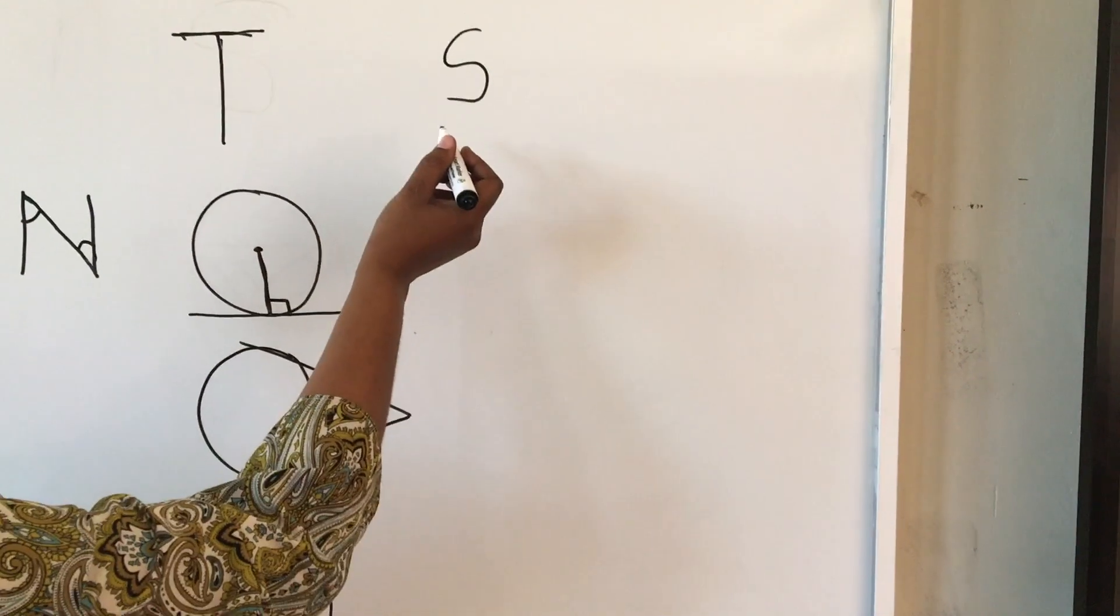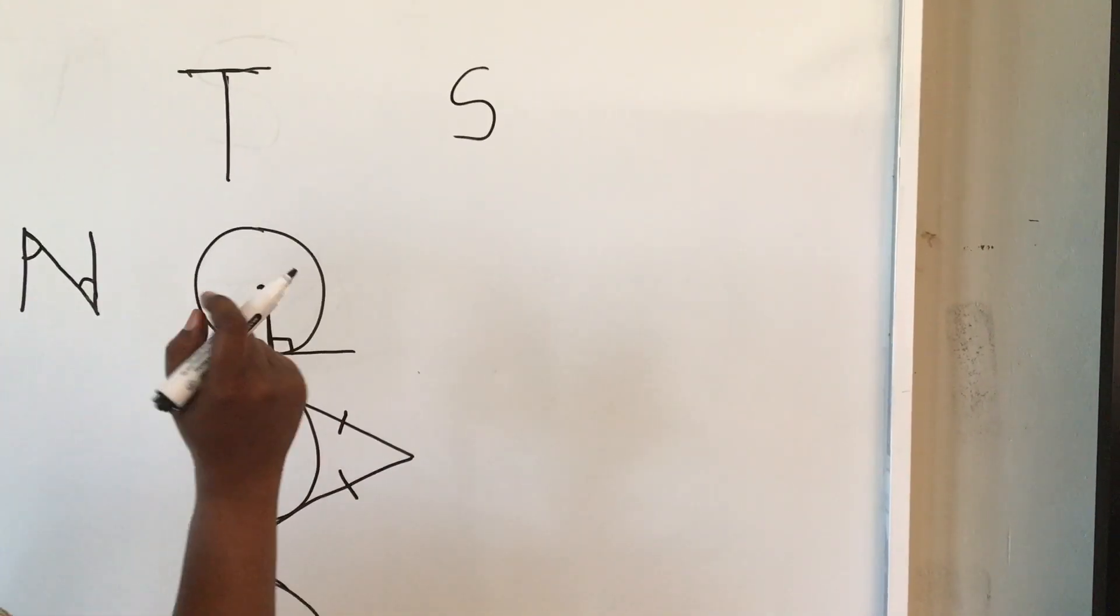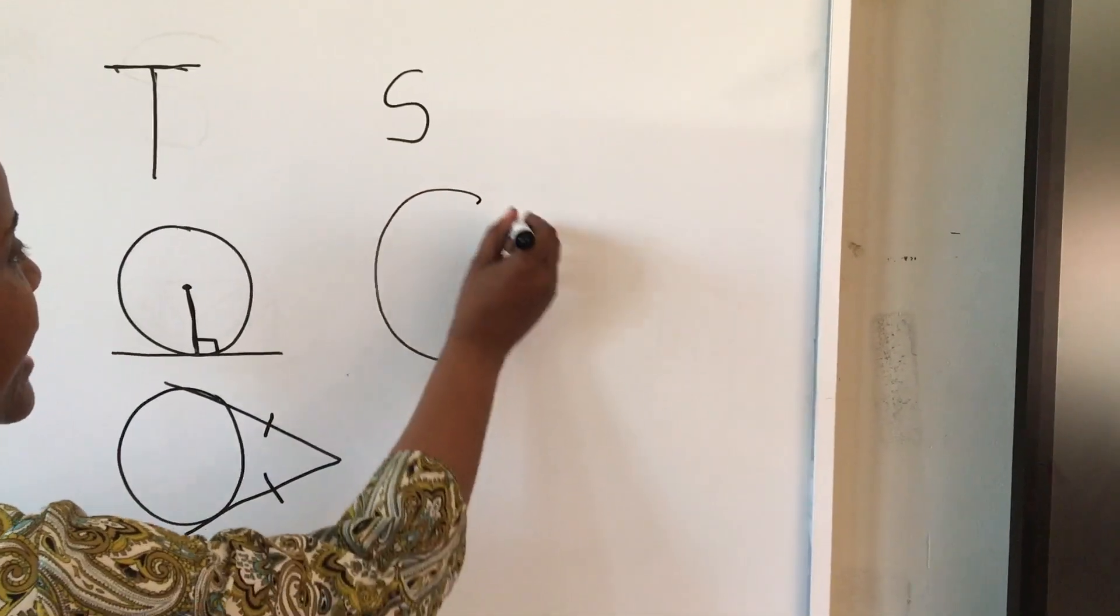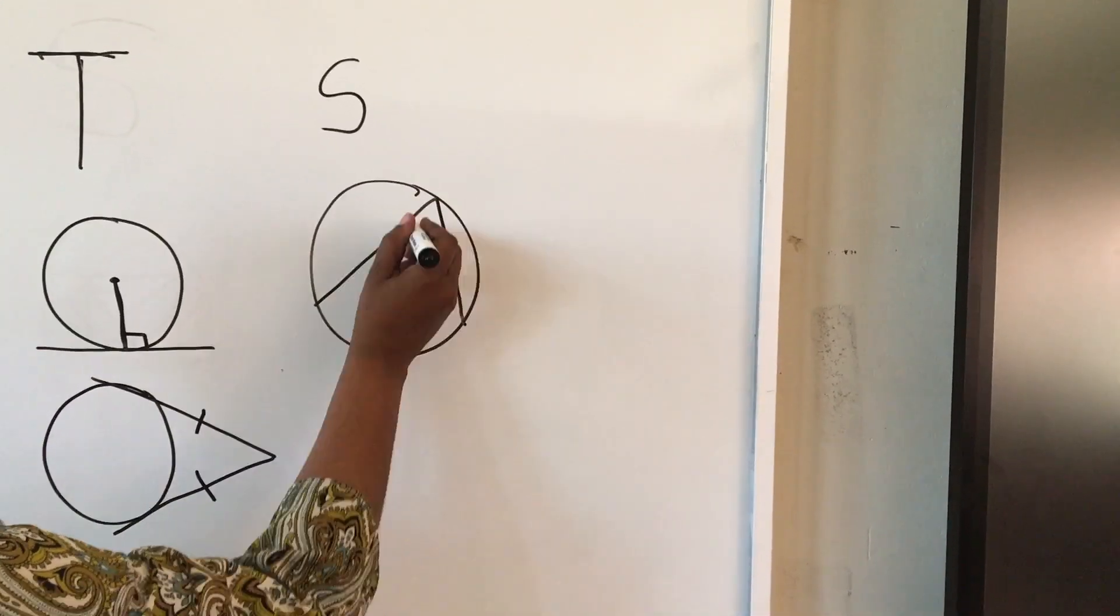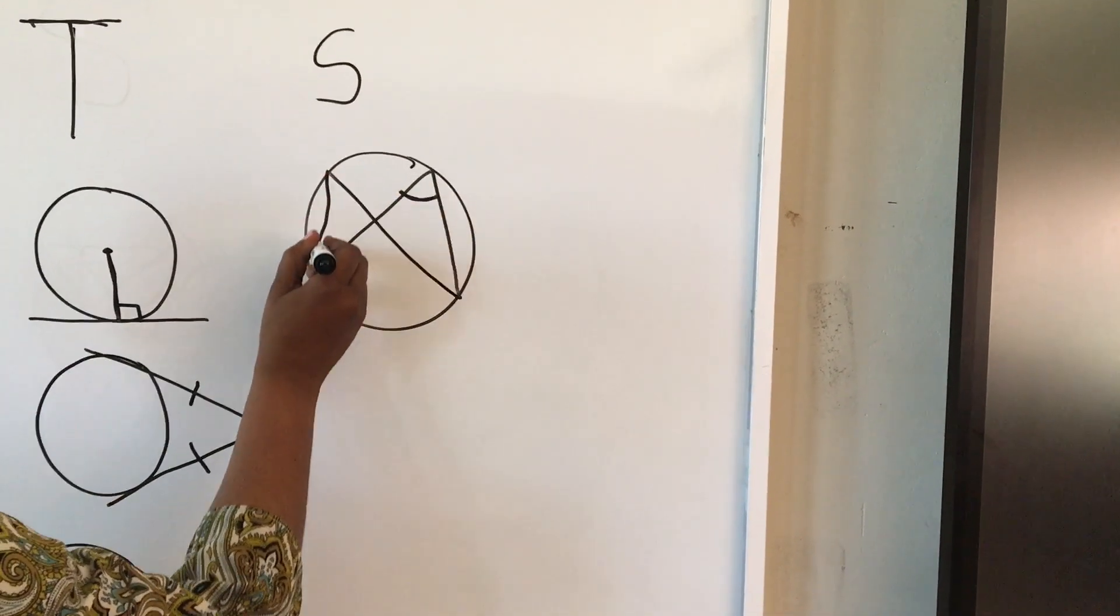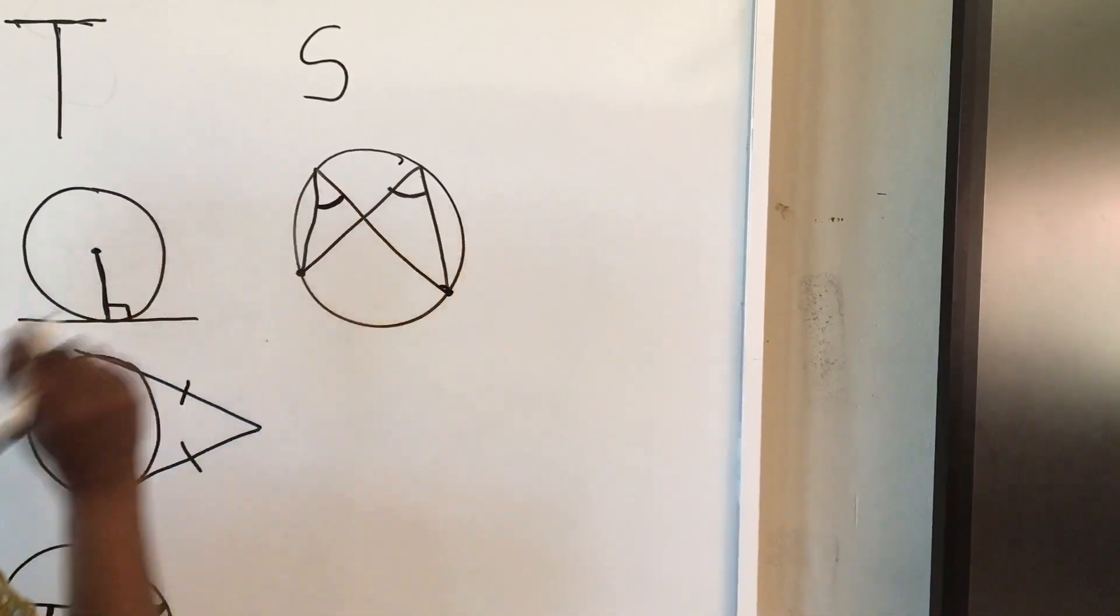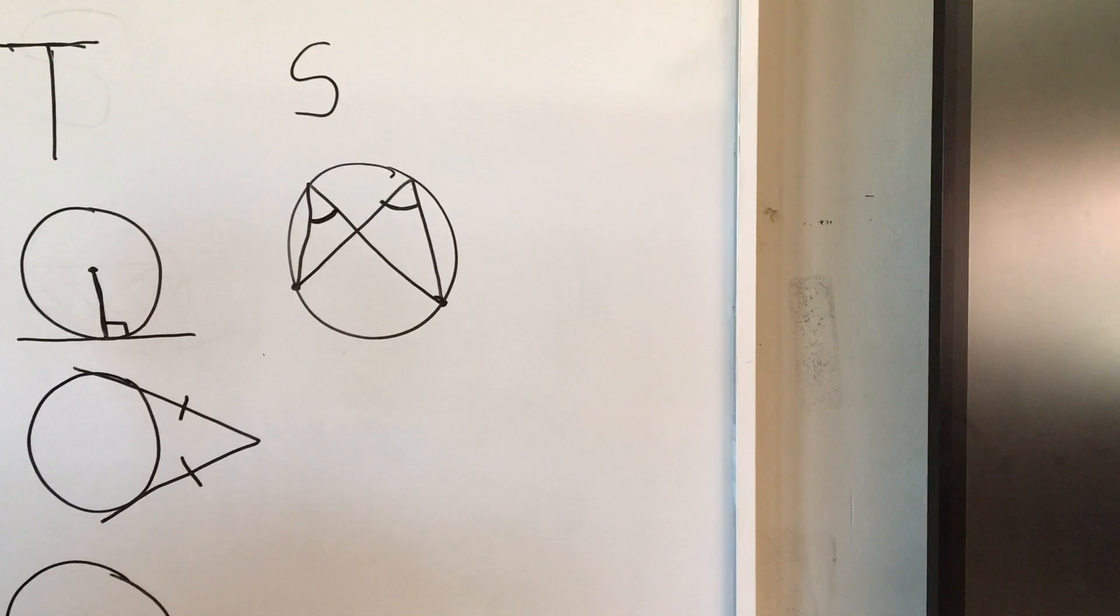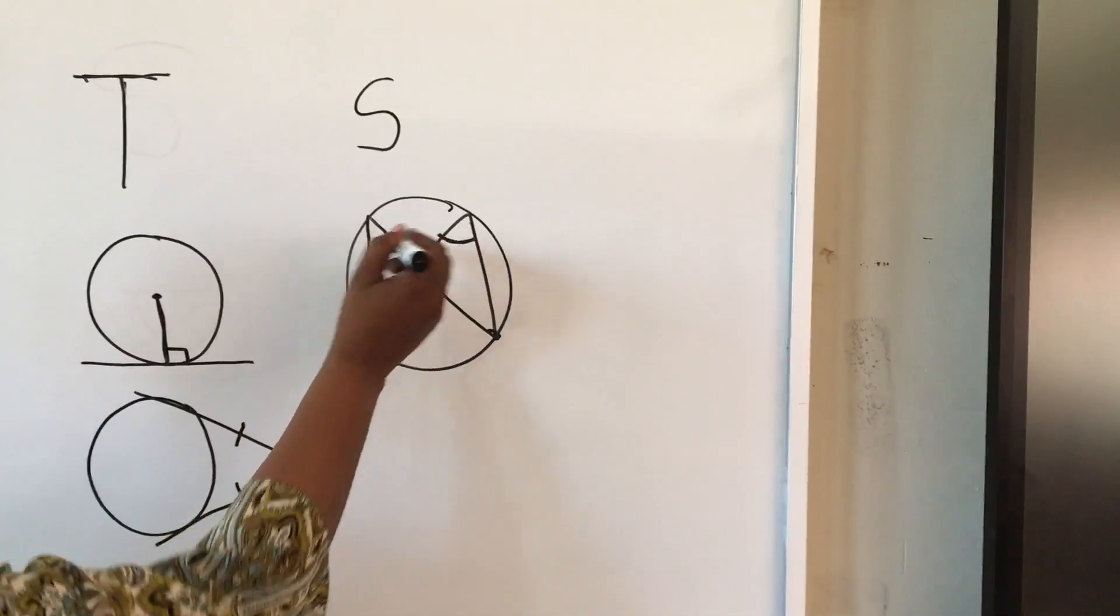The S stands for, it should remind you, angles in the same segment. How do you find the angles in the same segment? This angle, that is formed there, is equal to the angle that's at the same place as that one and at the same place, angles in the same segment. They are equal. So you need to look for that and find the angles.